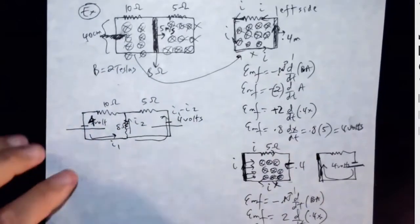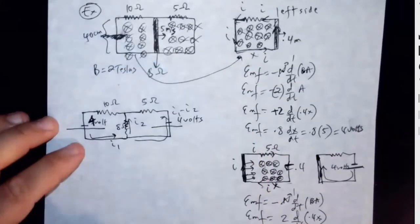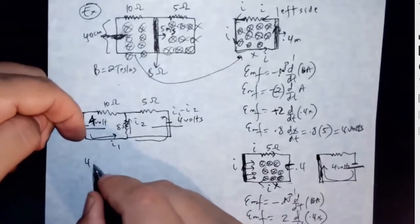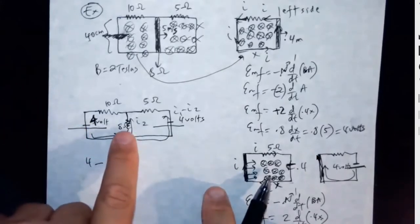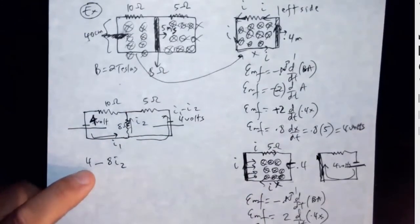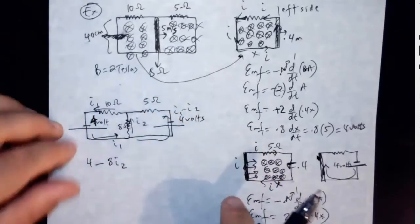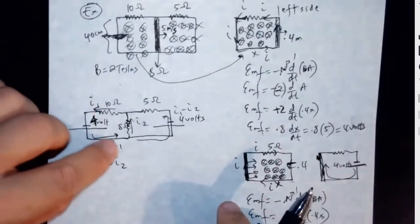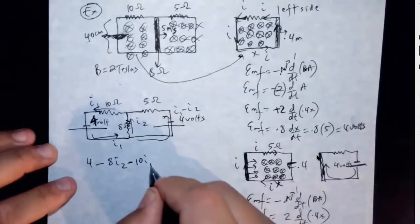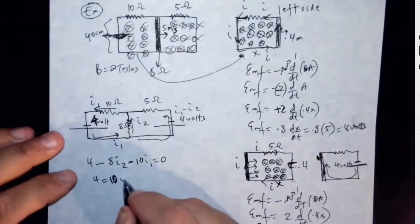Now do the Kirchhoff's loop equations. Call it I1, call this I2, and then call the sliding rod I1 minus I2. Analyze those loops. Going around the left loop: gain 4 volts, lose 8*I2 across the rod resistance, then lose 10*I1 across the 10 ohm resistor. So: 4 - 8*I2 - 10*I1 = 0.